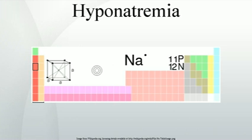Hyponatremia or hyponatronemia is an electrolyte disturbance in which the sodium ion concentration in the plasma is lower than normal.